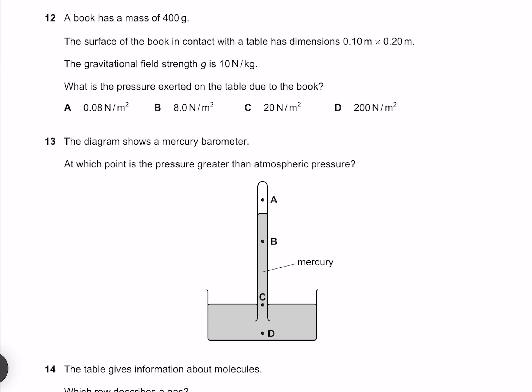A book has a mass of 400 grams. The surface of a book in contact with a table has dimensions 0.1 meters by 0.2 meters. The gravitational field strength is 10 newtons per kilogram. What is the pressure exerted on the table due to the book? Our pressure is our force divided by area, where our force is due to the weight of the book, given by its mass times the gravitational acceleration. Our mass is 400 grams or 0.4 kilograms, and our gravitational field strength is 10. Divide that by our area, gives me 200 newtons per meter square. Our answer is therefore D.